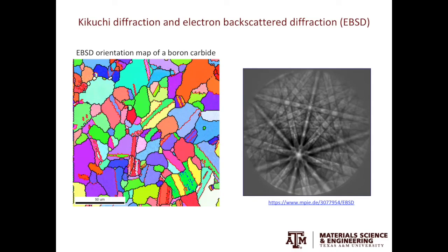Some of you may have experience with SEM, Scan Electron Microscopy. If the SEM is equipped with an EBSD detector — EBSD stands for Electron Backscatter Diffraction — you can acquire colorful maps like the example shown on the left in this slide. The color in the EBSD maps can tell you the crystal orientation. When the acquisition is happening and you pay attention to the EBSD detector, you can see all these line-like features on the detector. The locations of these lines will depend on the exact crystal orientation. The lines are called Kikuchi lines, and they are caused by Kikuchi diffraction.